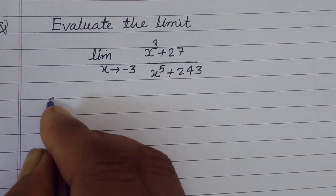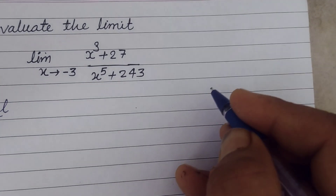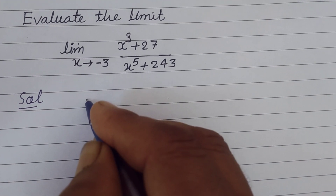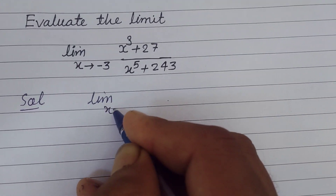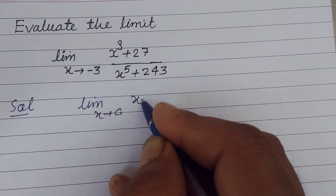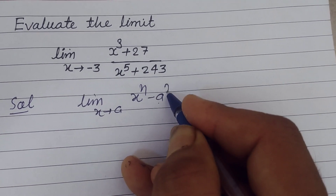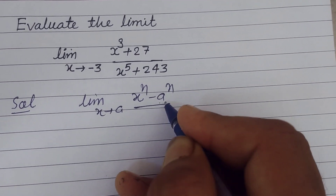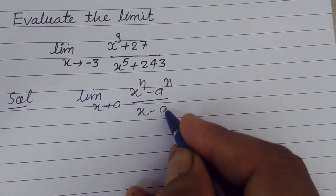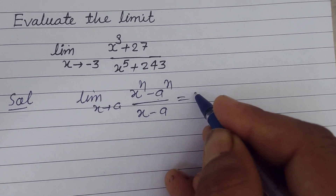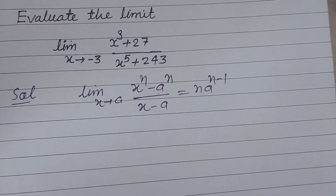First, proceeding with the question, we know that the standard result: limit x tends to a, of x to the power n minus a to the power n, upon x minus a, equals n times a to the power n minus 1.